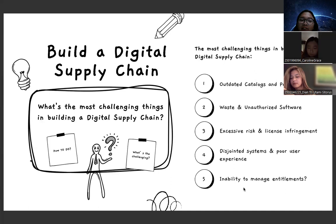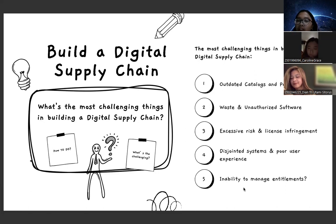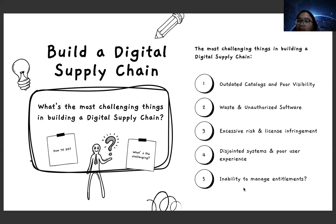Build a digital supply chain. What are the most challenging things in building a digital supply chain? The most challenging things are: Number one, outdated catalog and poor visibility. Number two, waste and unauthorized software.